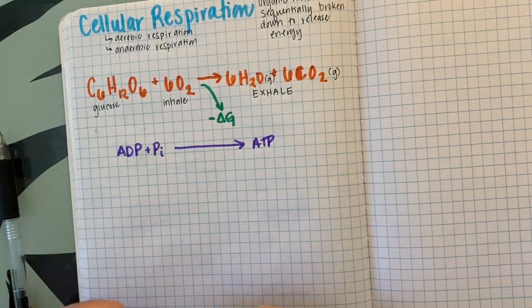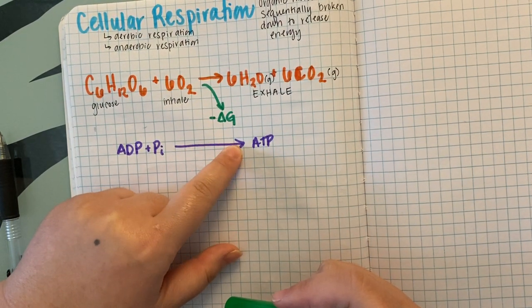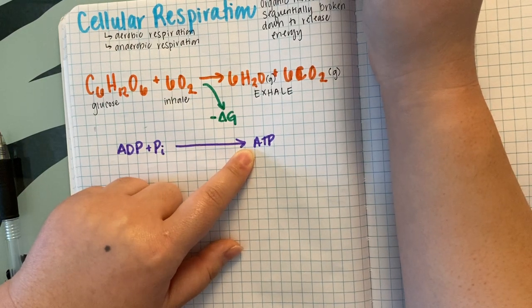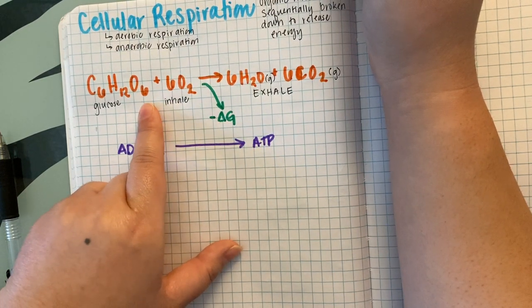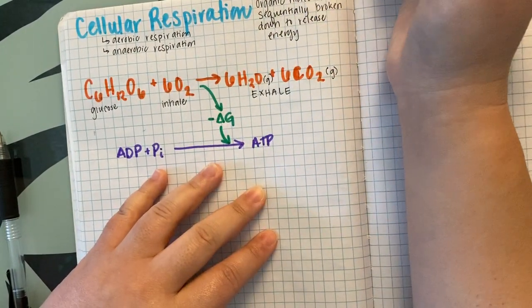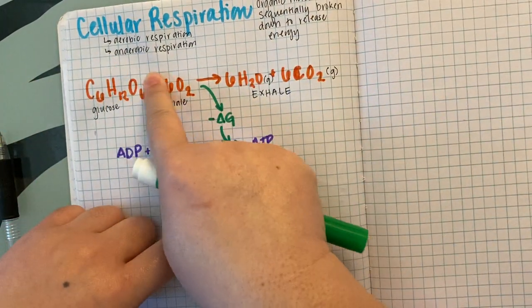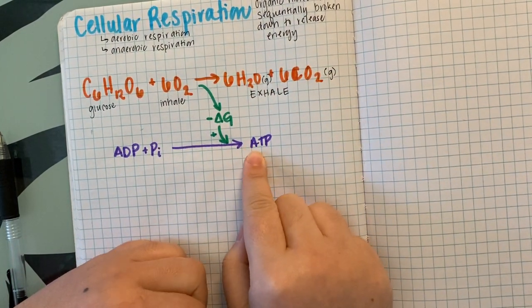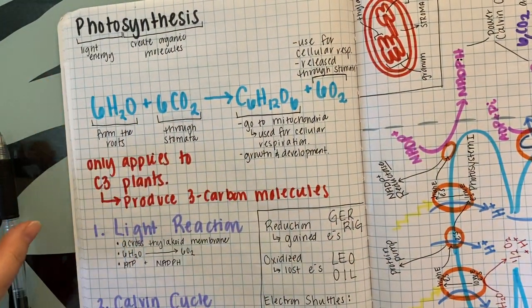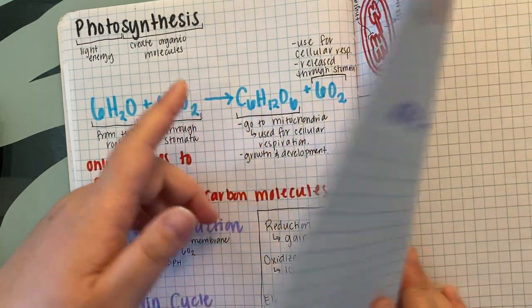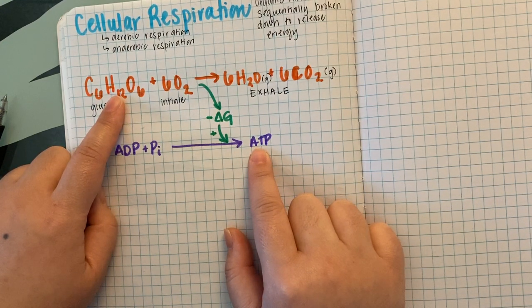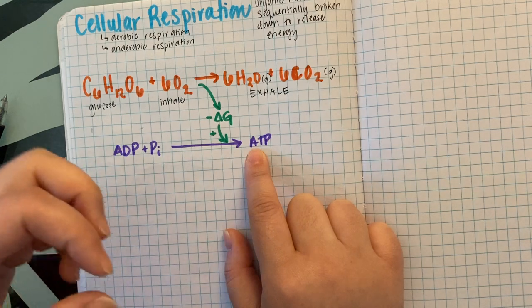How much energy is released from this exergonic reaction determines how many ATPs we can create. To create one ATP it takes about 7.3 joules of energy — divide the energy released from glucose by 7.3 to get the ATP yield. Photosynthesis transformed light energy into chemical energy as glucose; cell respiration transfers that chemical energy from glucose into ATP, which is our usable form of energy.